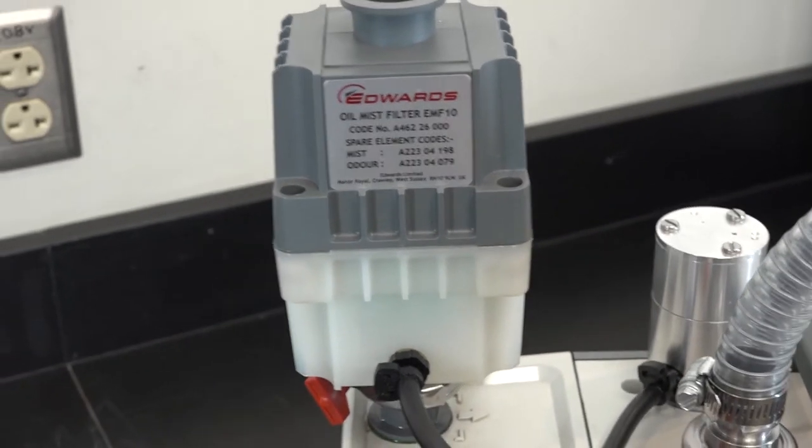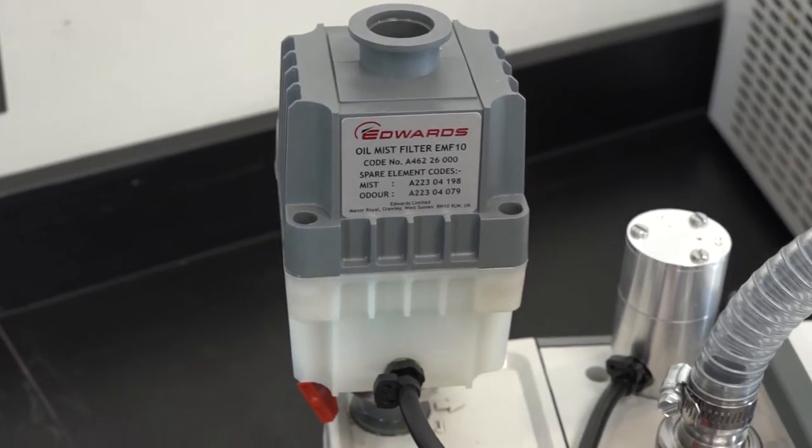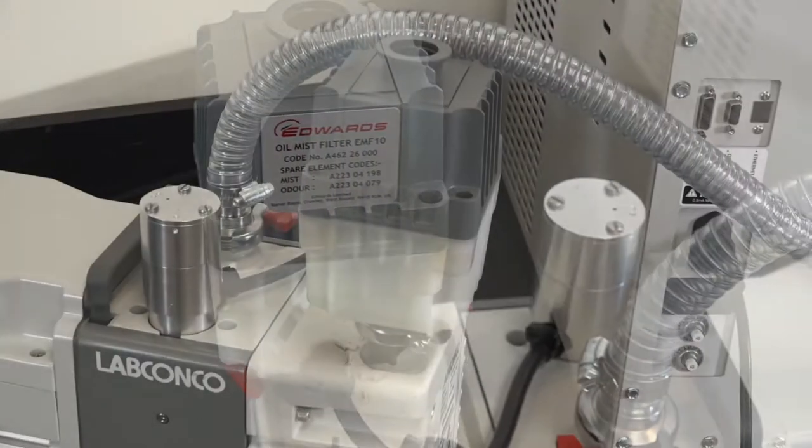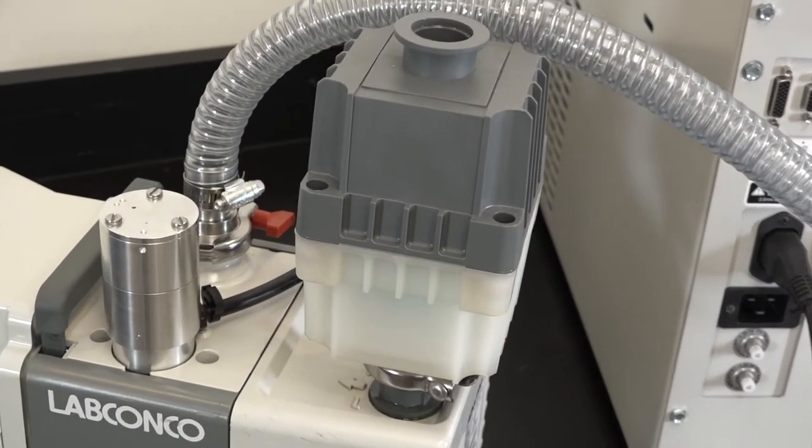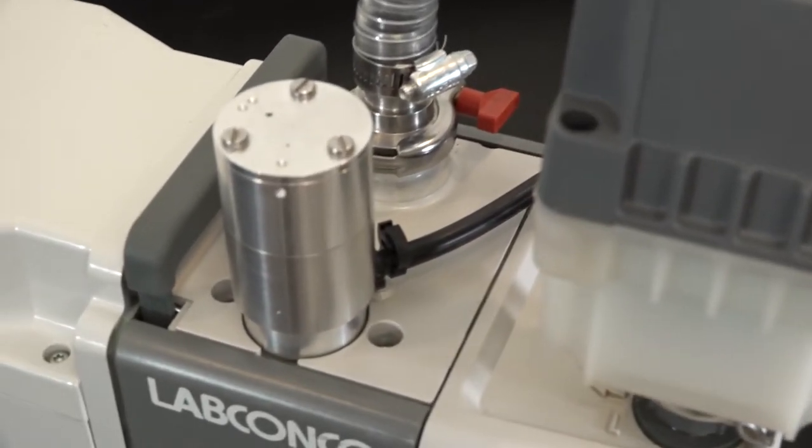An oil mist exhaust filter should be installed on your rotary vane vacuum pump to minimize oil mist exiting the pump. An oil return kit can be used with the exhaust filter to return trapped oil from the filter back to the pump.